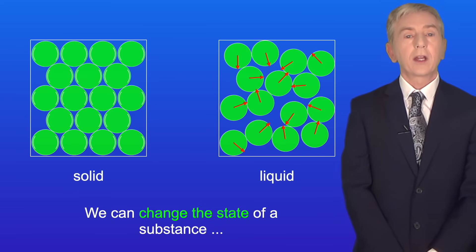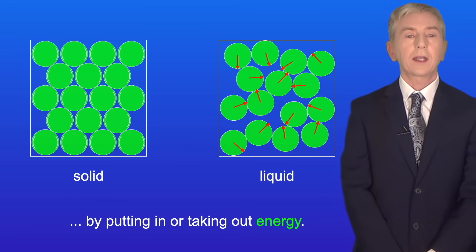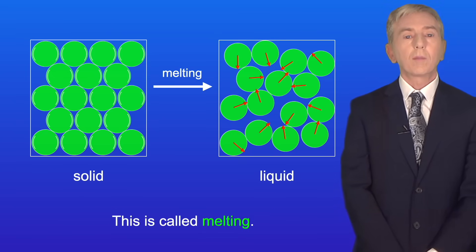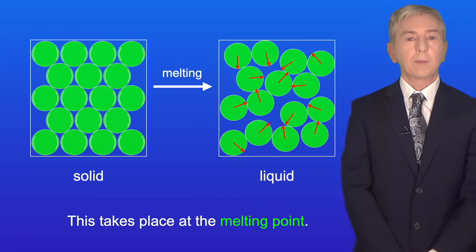Now, we can change the state of a substance by putting in or taking out energy. If we heat a solid, it can change state to a liquid. This is called melting. And this takes place at the melting point.